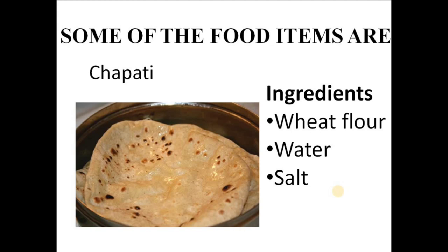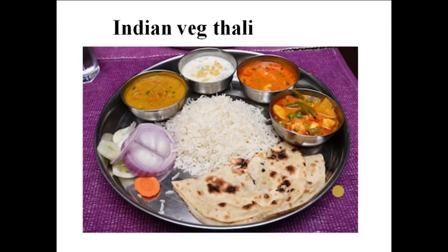Now let us see how these food items are made. If we take an example of chapati, it is made up of two main ingredients — wheat flour and water. Here is an example of an Indian veg thali, which includes rice, chapati, matar paneer gravy, dal, and curd.